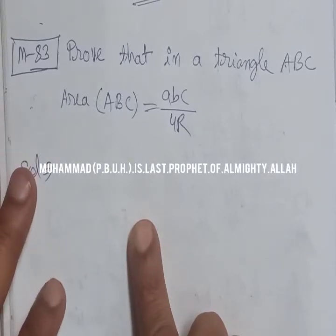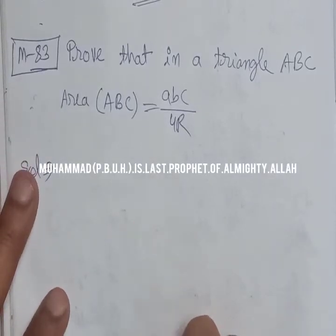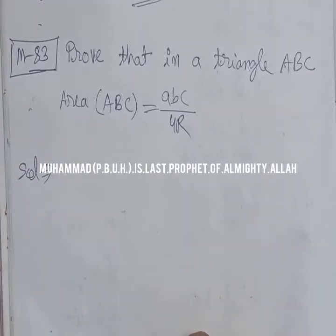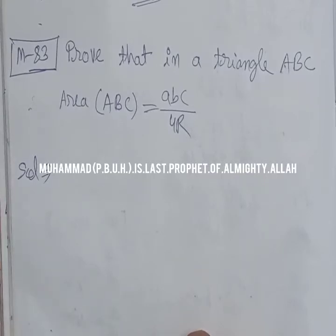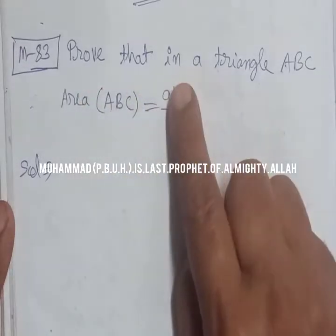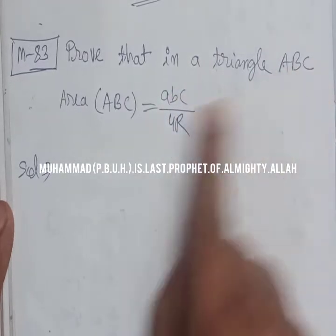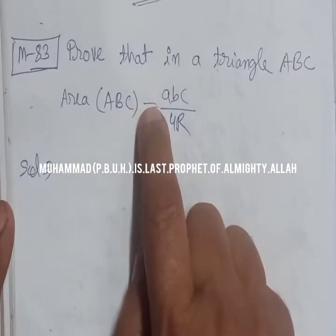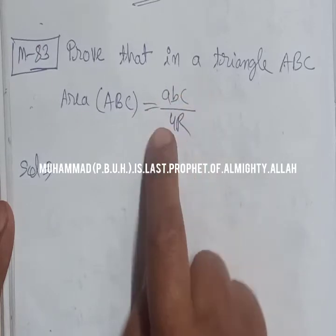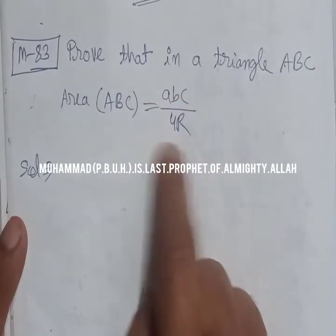Bismillahir Rahmanir Raheem. This problem is related to trigonometry. The name of the chapter is Solution of Triangle. Prove that in a triangle ABC, the area of the triangle is equal to abc upon 4R.